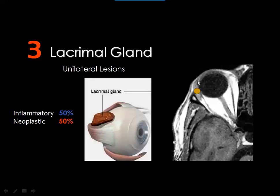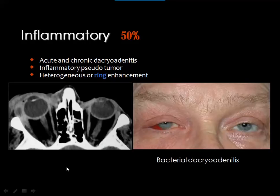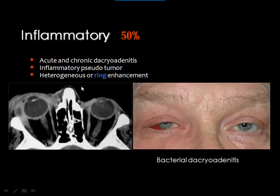The lacrimal gland is normally located in the superior lateral aspect of the orbital cavity. We consider lacrimal gland lesions in two main categories. If you see a unilateral lacrimal gland pathology, think of 50% inflammatory disease and 50% neoplastic lesions. One of the most common inflammatory diseases is the lacrimal pseudotumor. Acute and chronic dacryoadenitis, inflammation of the lacrimal gland, and inflammatory pseudotumor may result in enlargement of the lacrimal gland with homogenous or heterogeneous contrast enhancement, and sometimes marginal enhancement indicating an abscess affecting the right lacrimal gland.